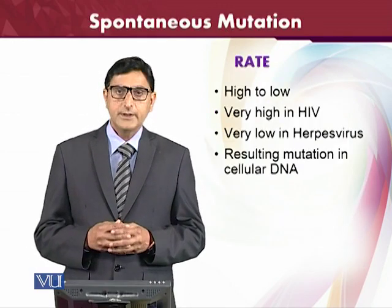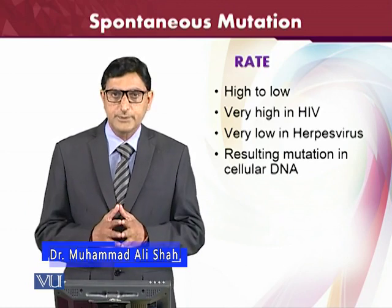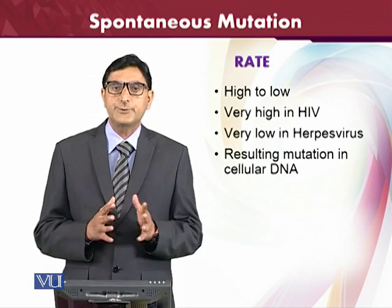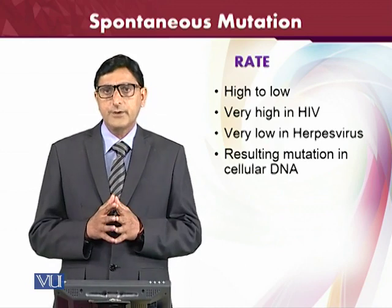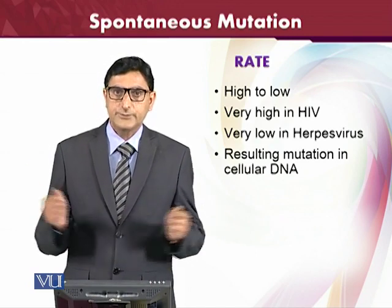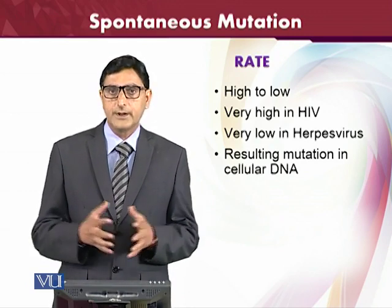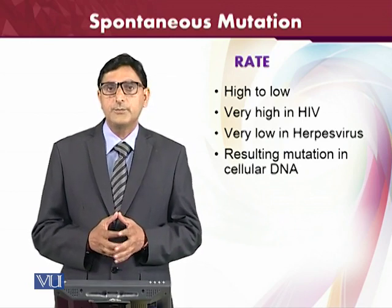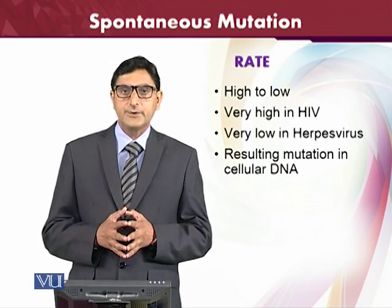We will study spontaneous mutations first. Their mutation rates can vary — maybe 10 to the power of 1, 3, or 4. It all depends upon the methods of replication and the length of the genome of the virus. If the genome length is bigger, the mutation rate will also be higher. For example, the HIV virus has a very high rate of mutation, while very low mutations occur in the herpes virus.